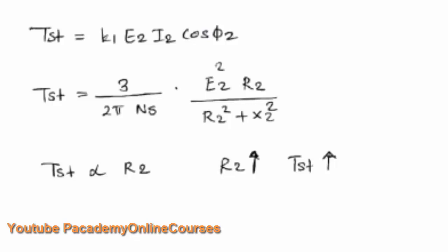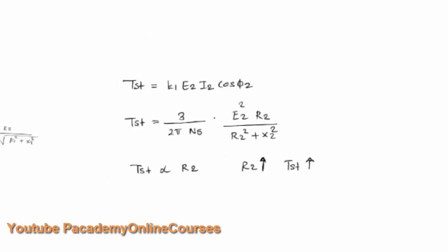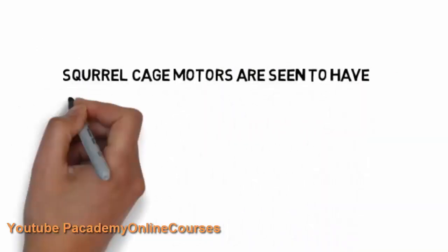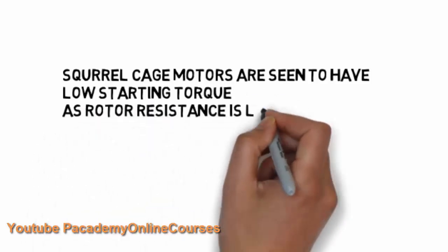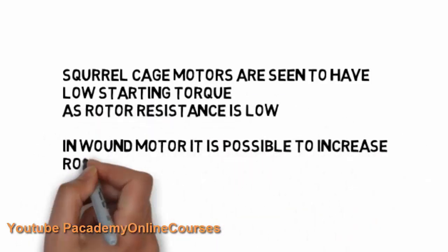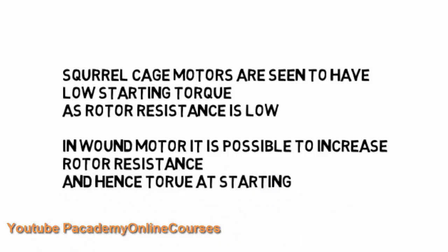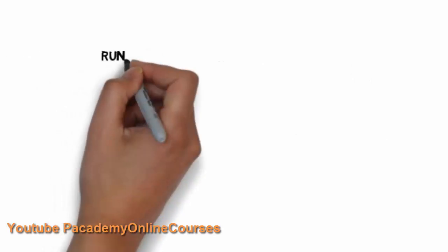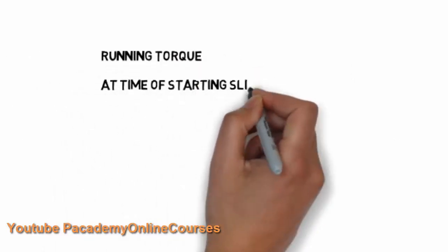The starting torque is directly proportional to the rotor resistance. In a slip ring induction motor, increasing the rotor resistance during starting increases the starting torque. Squirrel cage induction motors have low starting torque because their rotor resistance is low. In wound rotor (slip ring) induction motors, it is possible to increase the rotor resistance and hence increase starting torque — this is one of the key application differences between the two motor types.